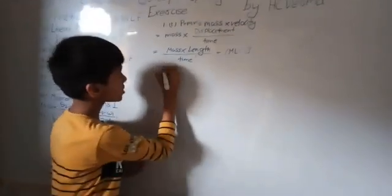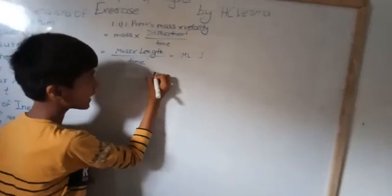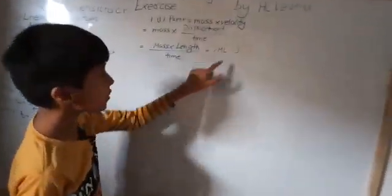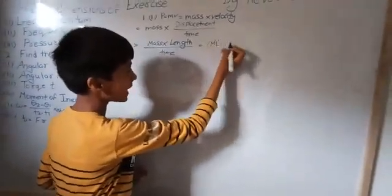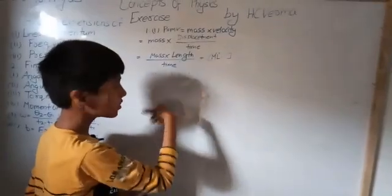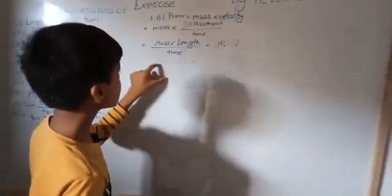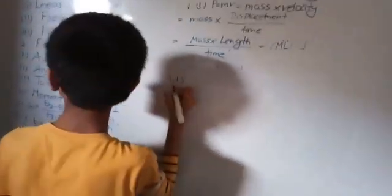So the dimensional formula for linear momentum is [MLT⁻¹], and the dimensions are 1, 1, and minus 1 — because the power on M is 1, on L is 1, and on T is minus 1.